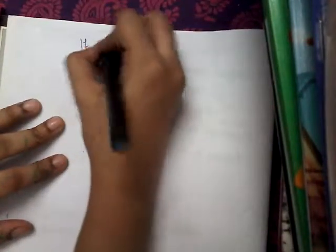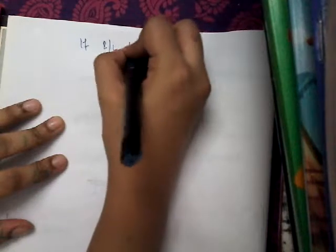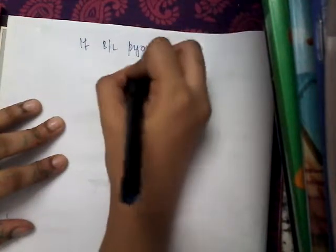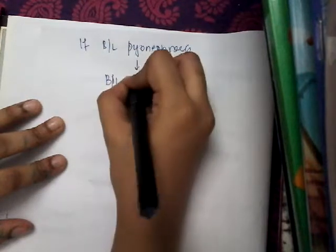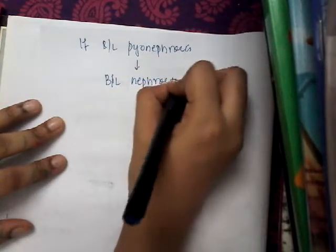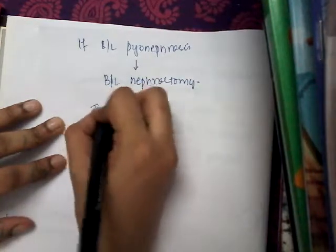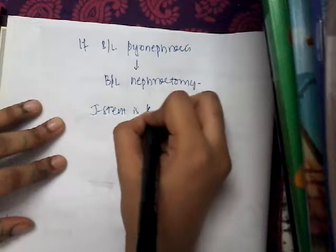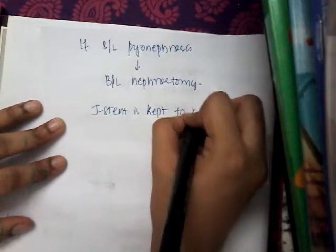Then, if there is bilateral pyonephrosis, what do you do? If there is bilateral pyonephrosis, then you should do bilateral nephrostomy. And then a J-stent is kept to keep the ureters patent.